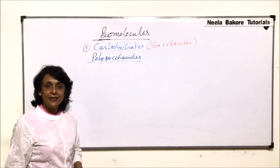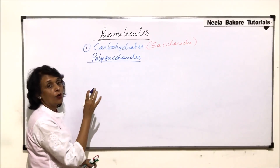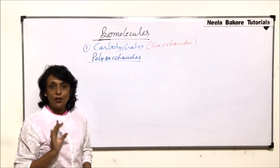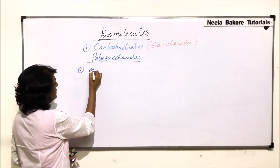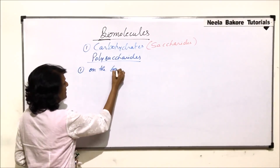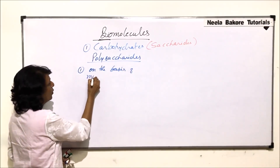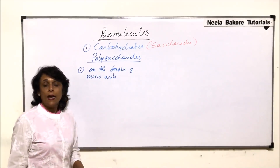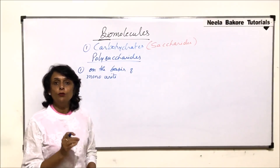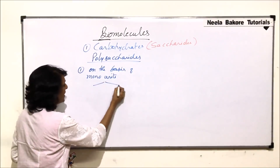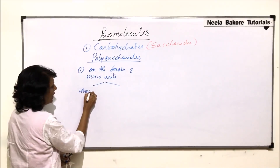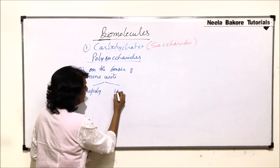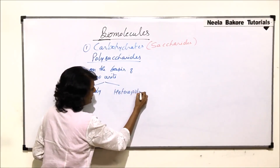These polysaccharides are classified according to two criteria. The first is on the basis of the mono units they are made up of. If all the mono units are the same, then we classify it as a homopolysaccharide. And if the mono units are different, then they would be called heteropolysaccharides.